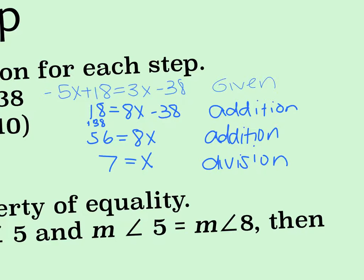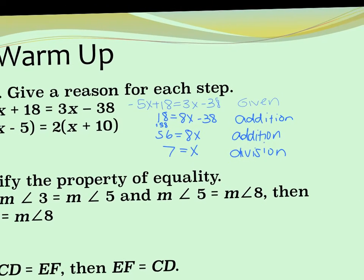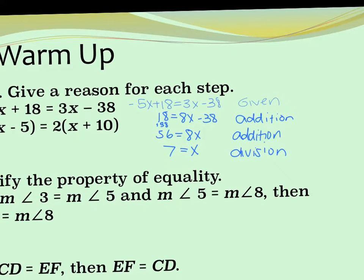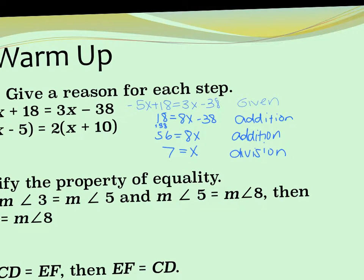Questions on that one? Fernando. If you move the 3x over to the negative 5x? Absolutely, yeah, there's more than one way to do this. If you did that, it would have been subtraction, right, and then subtraction again for the 18, and then still would be division for that last step.